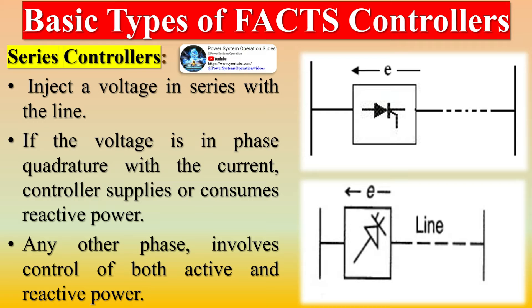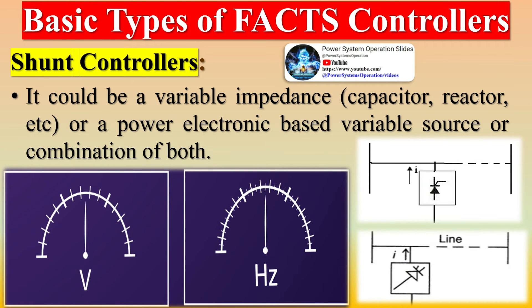FACTS devices can be used for dynamic control of voltage; they can also control the impedance and phase angle of high voltage AC transmission lines. Basic types of FACTS controllers are: series controllers, shunt controllers, combined series-series controllers, and combined series-shunt controllers.